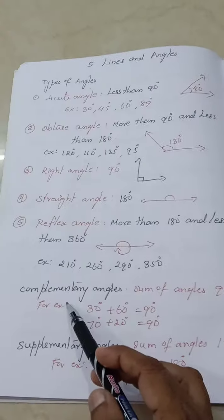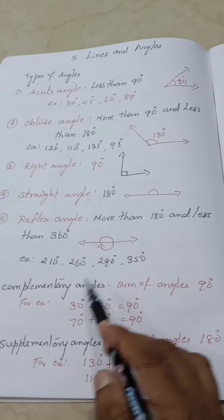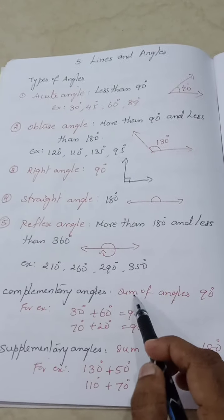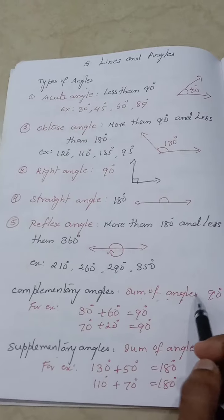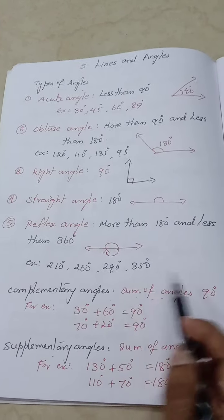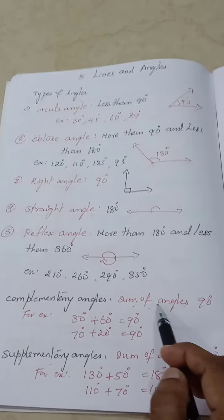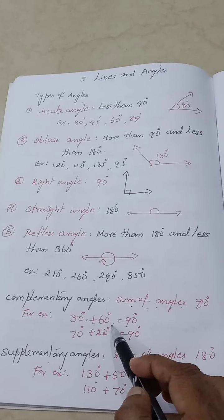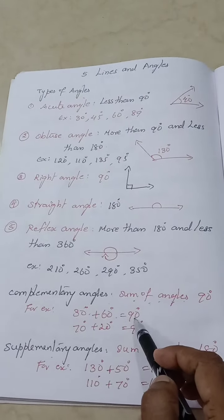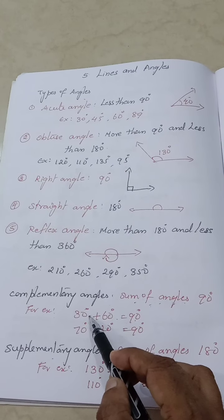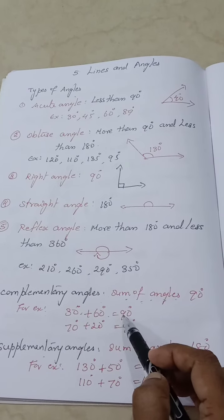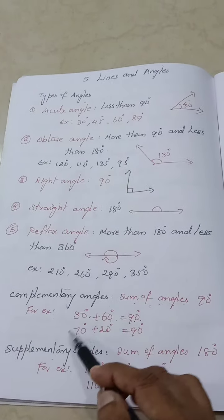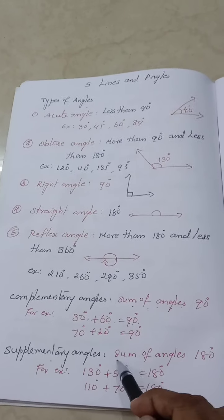Now let us see complementary and supplementary angles. Complementary angles are two angles whose sum is 90 degrees. For example, 30 plus 60 equals 90 degrees — so when you add two angles and get exactly 90 degrees, they are called complementary angles.